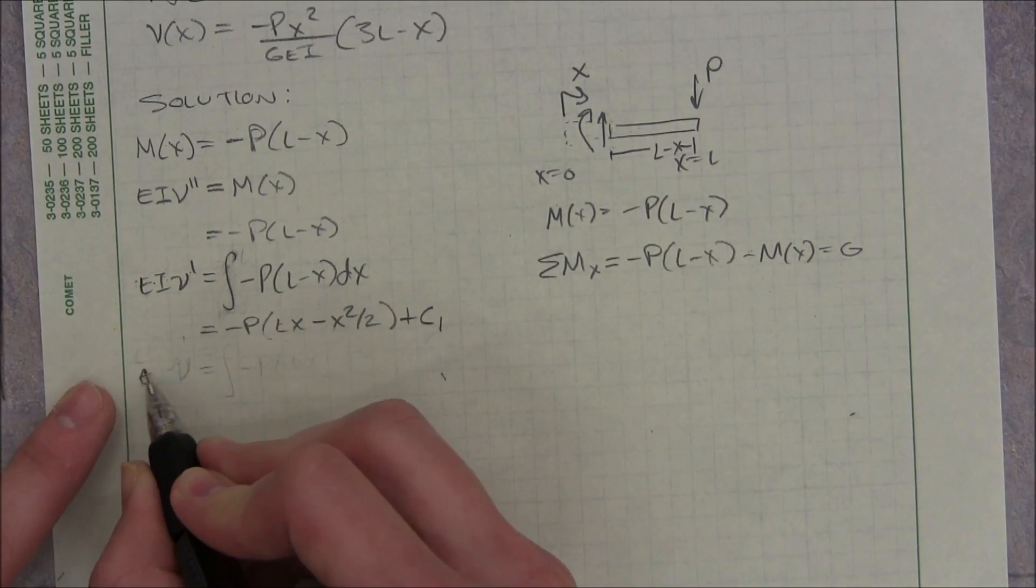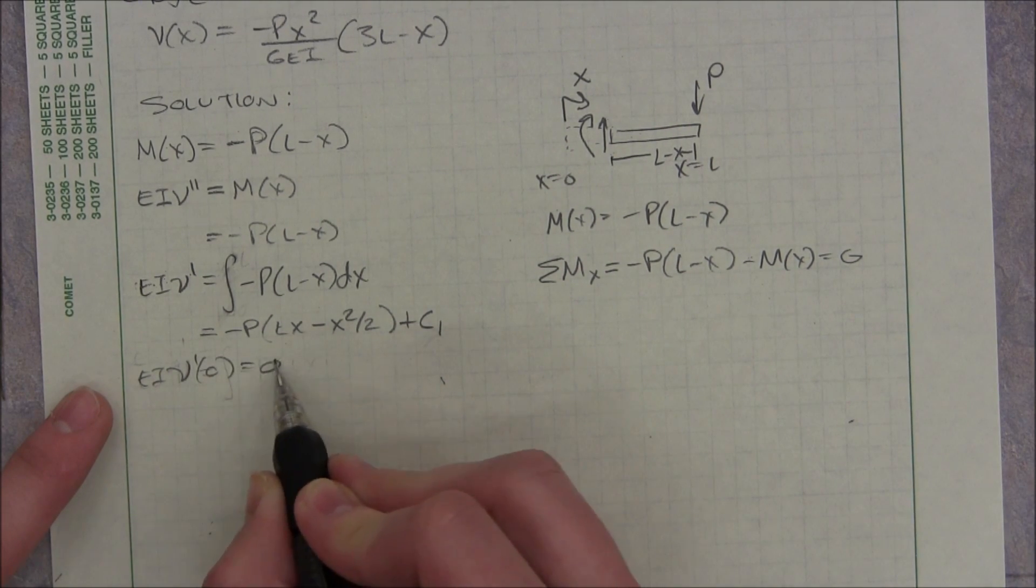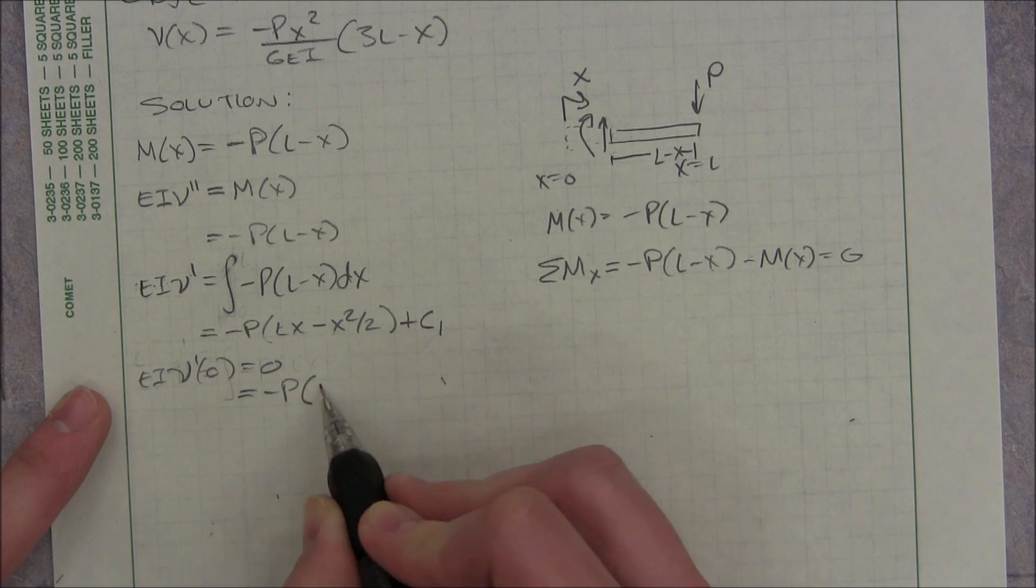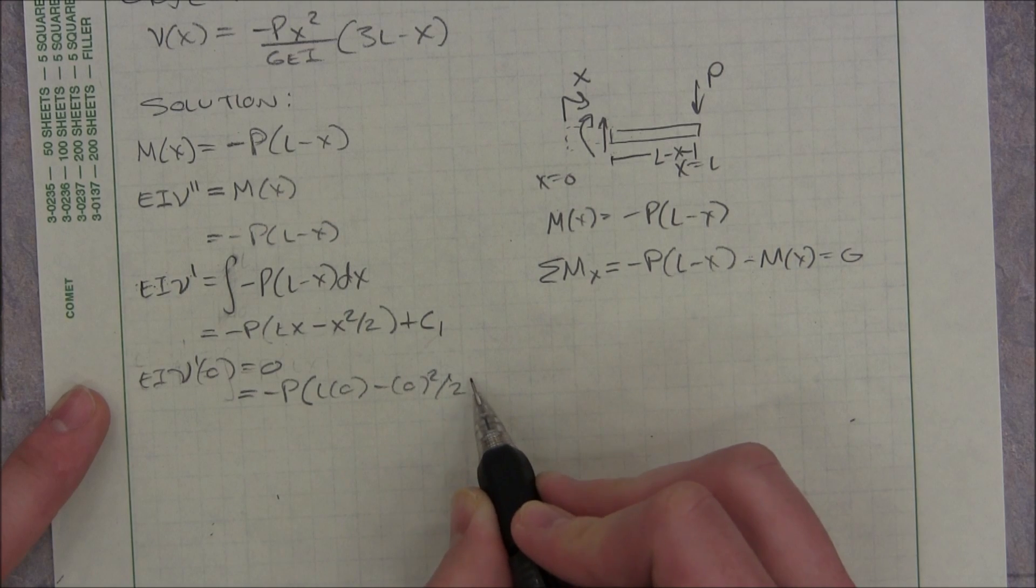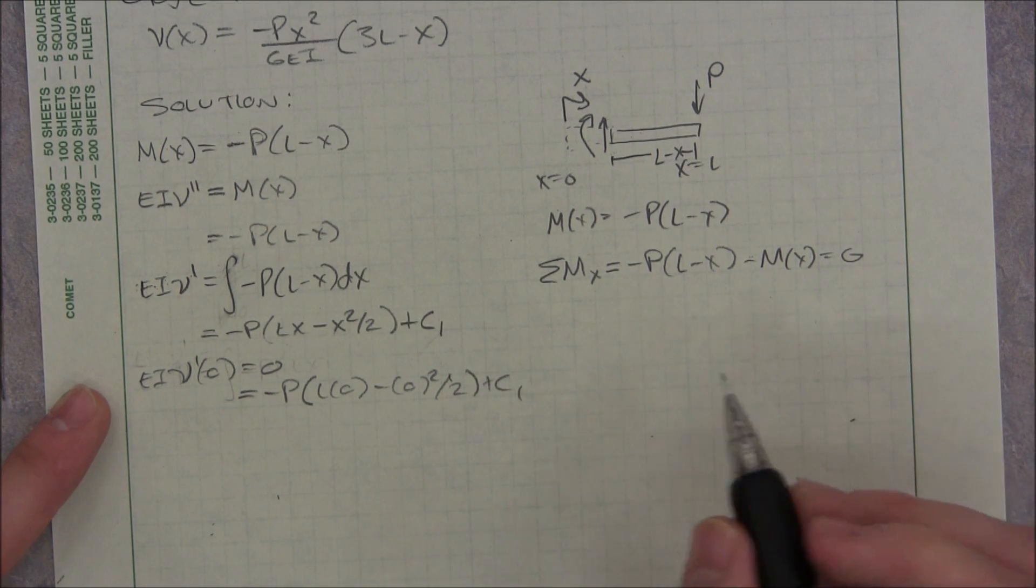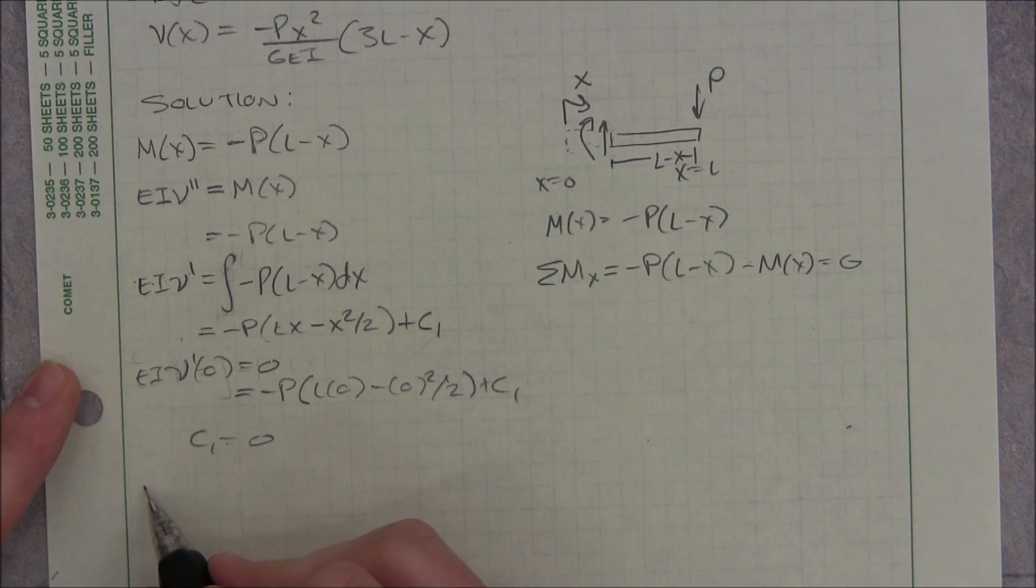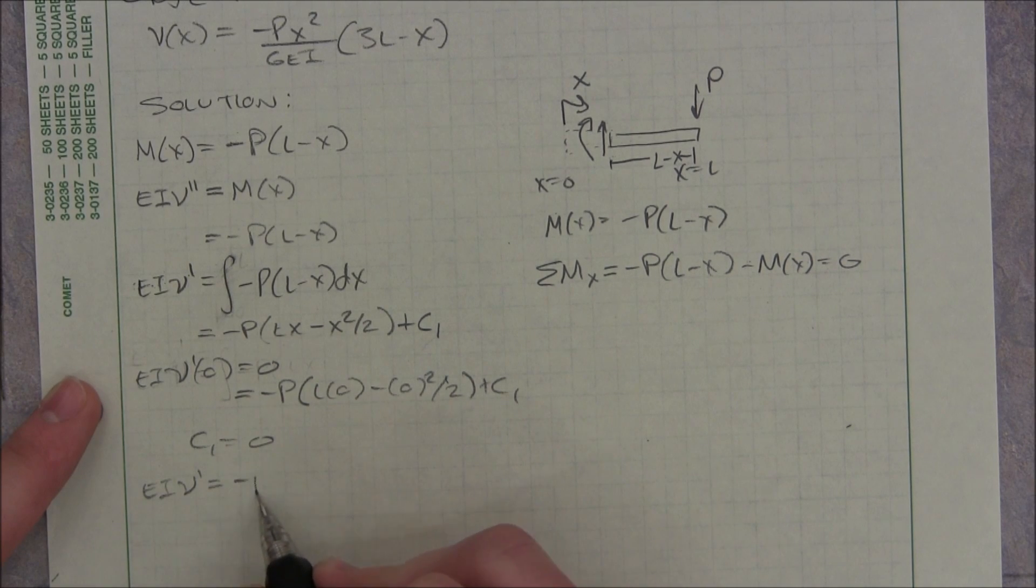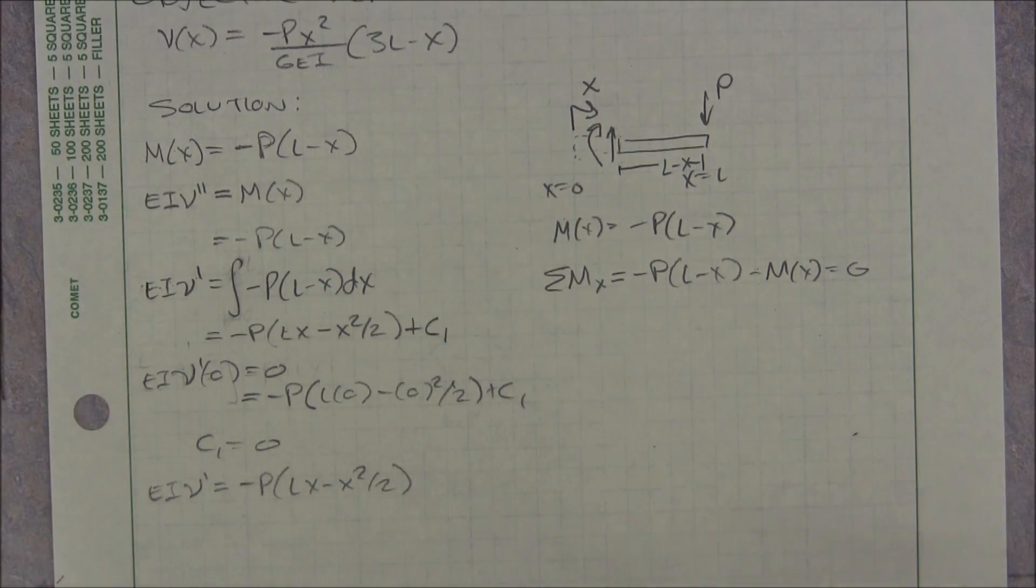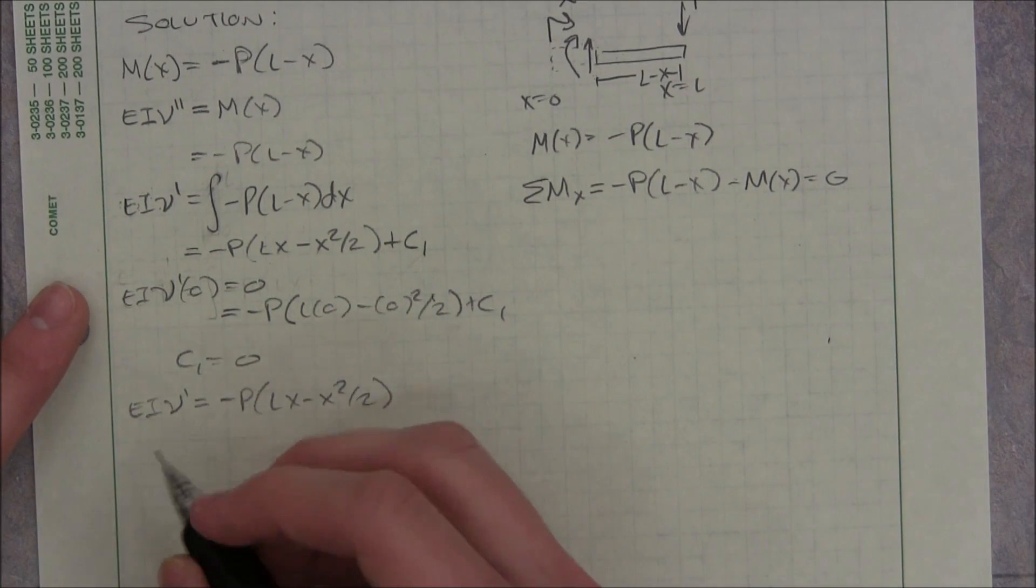So I can say our slope at 0 equals 0, which equals negative P L times 0 minus 0 squared divided by 2 plus c1. And since all that goes to 0, c1 equals 0. So our final slope equation equals negative P L minus x squared divided by 2. But we're looking for the deflection curve, so I have to integrate again.